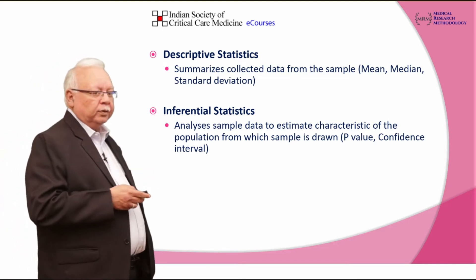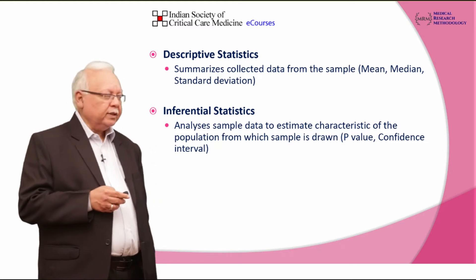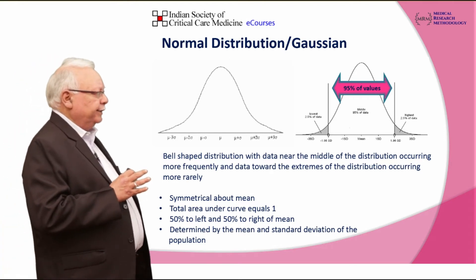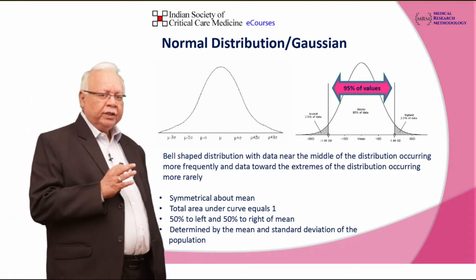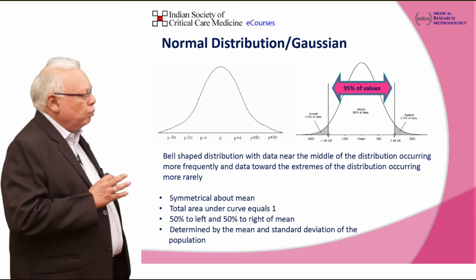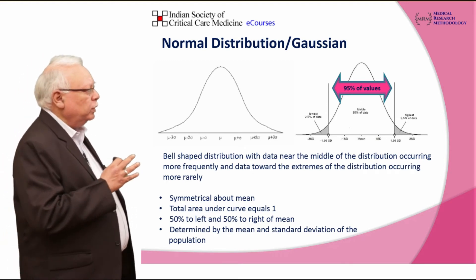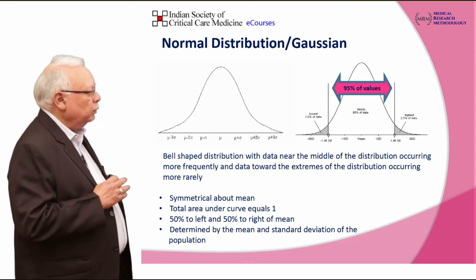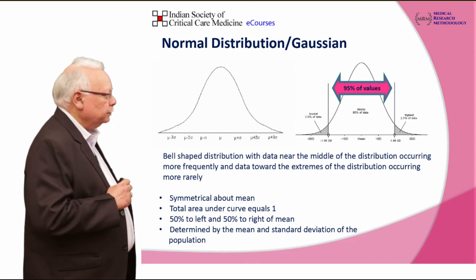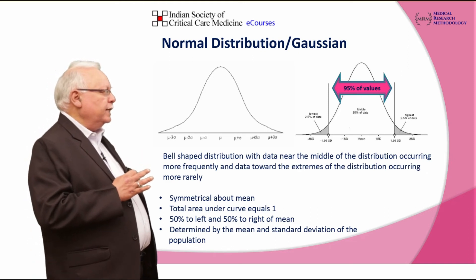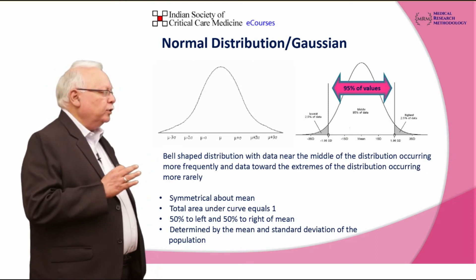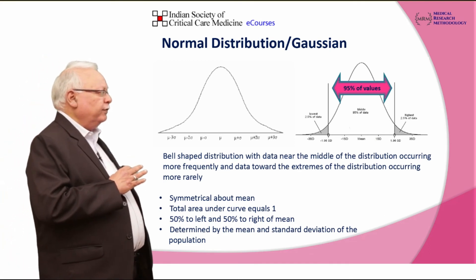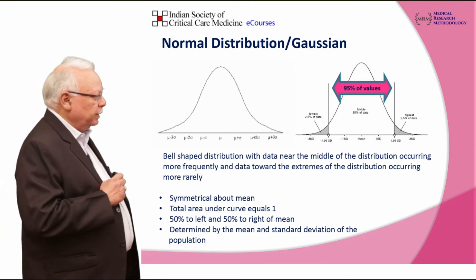In inferential statistics we talk about p-values and confidence intervals. Normally when data is gathered and if the data is sufficiently large enough, most of this data usually follows a natural or normal distribution with a bell-shaped curve. That means there is a mean and a median, the total area under the curve is 1, with 50% to the left and 50% to the right of the mean.